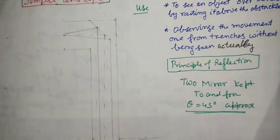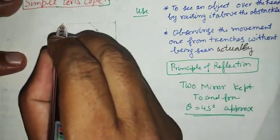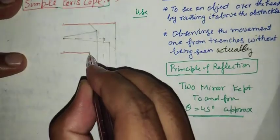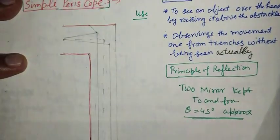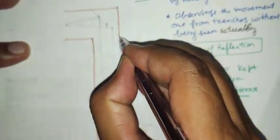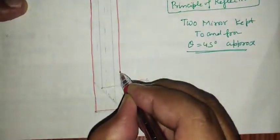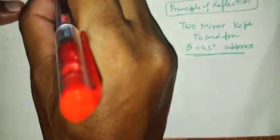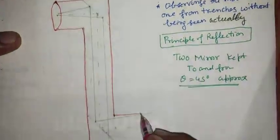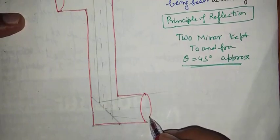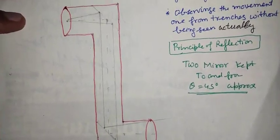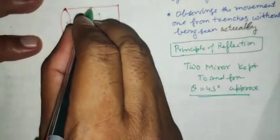To make it, let us consider a cylindrical construction made up of opaque material. Normally, in this, we use two plane mirrors.